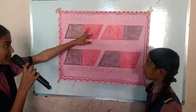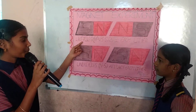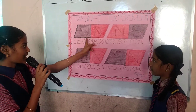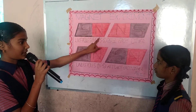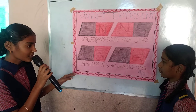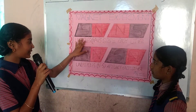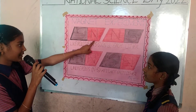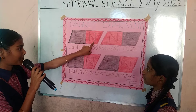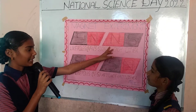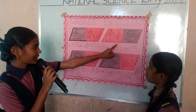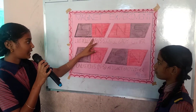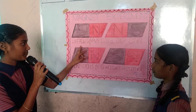A magnet has two poles: south and north. This magnet is facing the north pole, and another magnet is also facing the north pole. These are called like poles. Like poles repel each other.